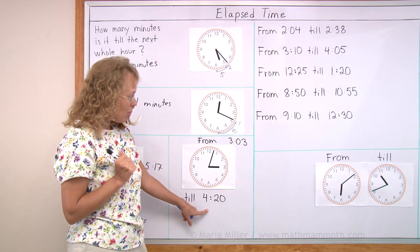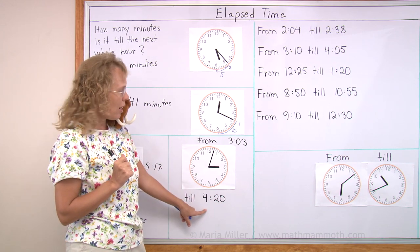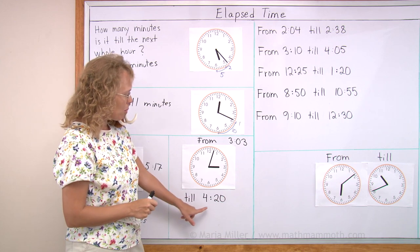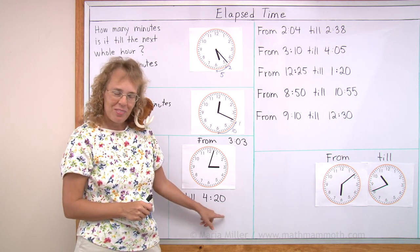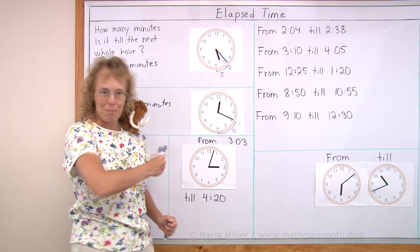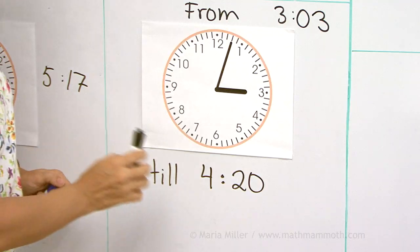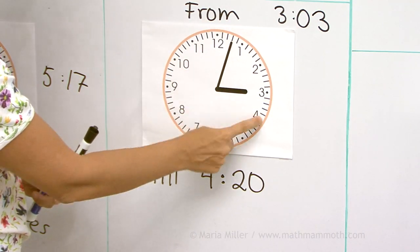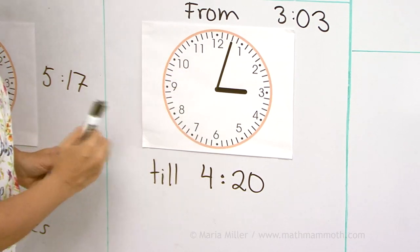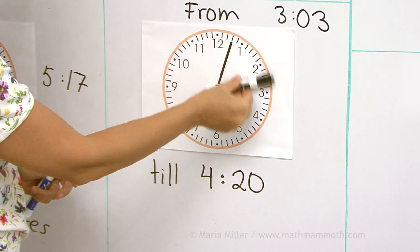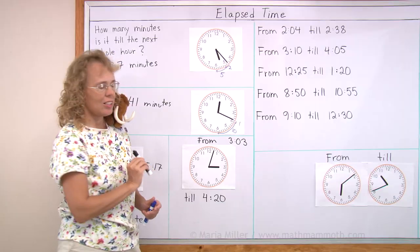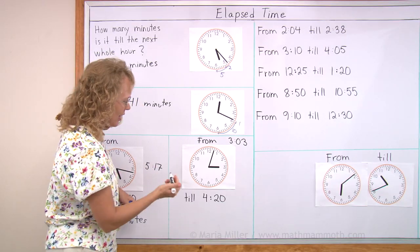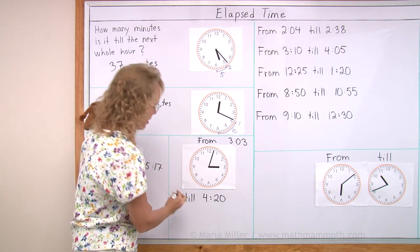In fact, there is more than one hour between these two times. Because if there was exactly one hour, then we would have 4:03. So it is one hour and some more. If we go exactly one hour, then we would have 4:03 here. And then we go from the 03 till 20 minutes. And you can subtract there. 20 minus 3, 17. So we would get one hour, 17 minutes.